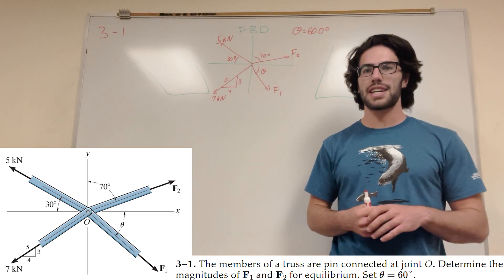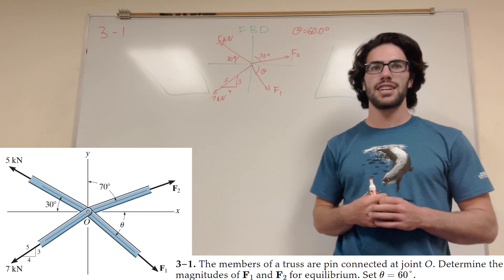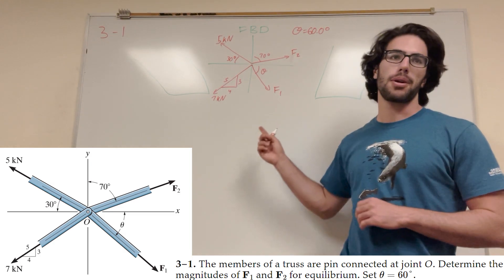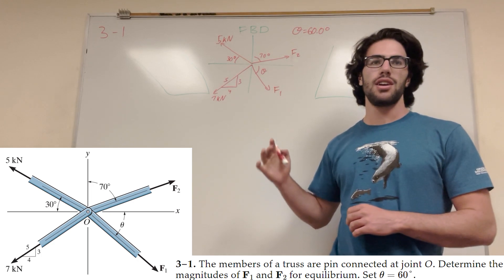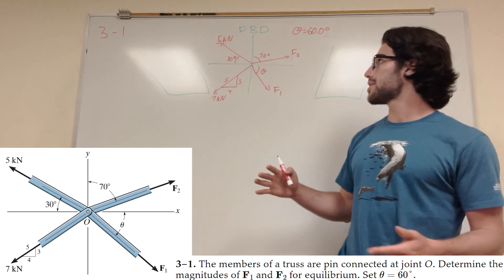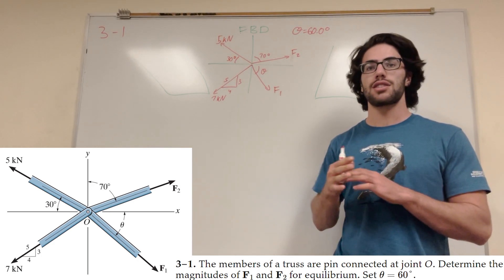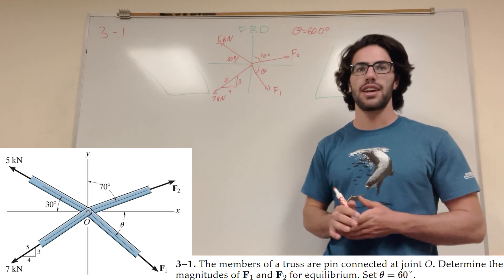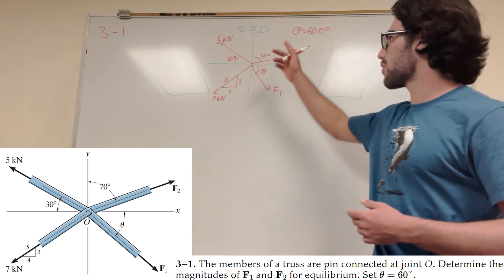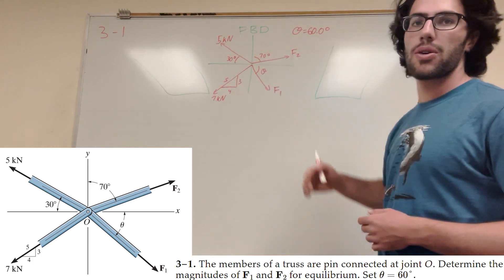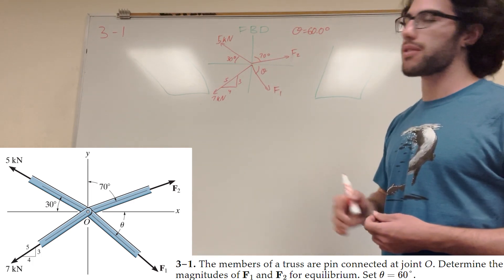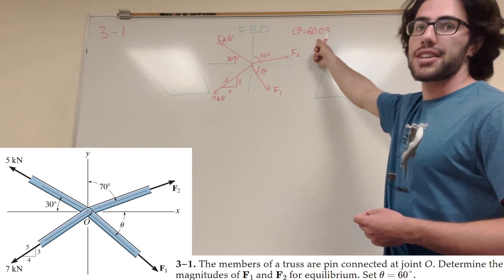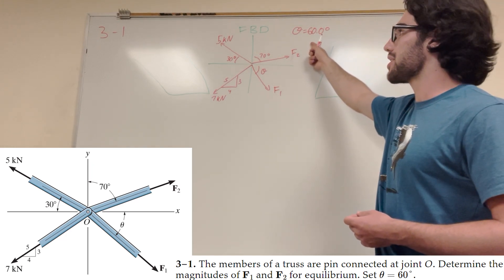What's up, Calc gang? Welcome back to statics. So we got this problem — it's an equilibrium problem. All of our forces are in equilibrium, which means there's no movement, no acceleration happening. We're given these four forces. It wants us to find what force 1 and force 2 are equal to, given that our theta is equal to 60 degrees.